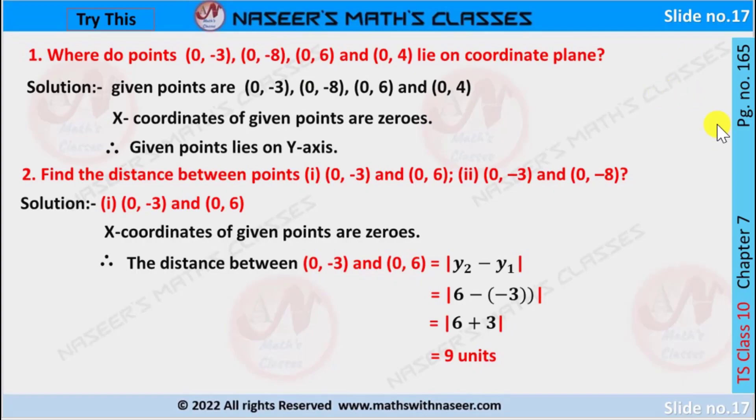Try this: page number 165, Chapter 7, Coordinate Geometry. Where do points (0, -3), (0, -8), (0, 6) and (0, 4) lie on the coordinate plane?